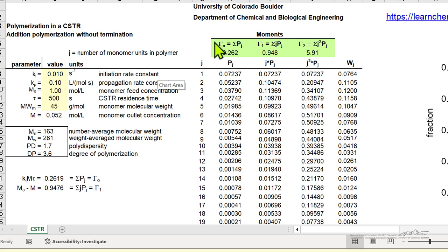Over here, it calculates the moments. The zero moment is the sum of the polymer concentrations, the first moment is the sum of the weight polymers, and the second moment is used in some calculations.